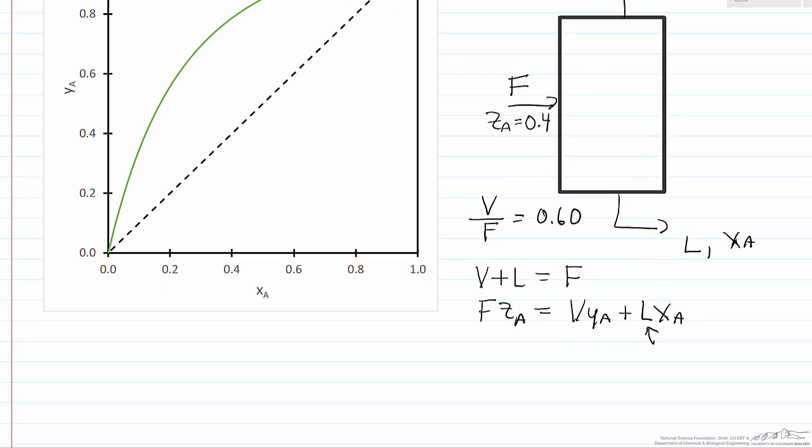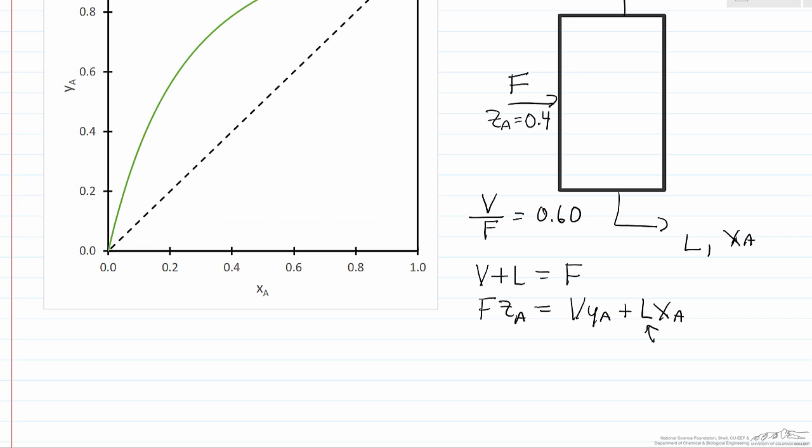Well we can combine these two equations and eliminate L. And so the algebra is pretty simple, so I'm just going to write down the answer, and I've written it in this form because we're interested in a certain fraction that's being evaporated, in this case 0.6. So in the equation V over F appears because we know that value. And so what we're going to do is draw this mass balance.